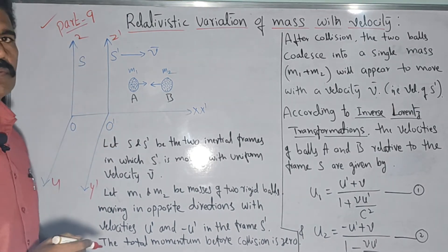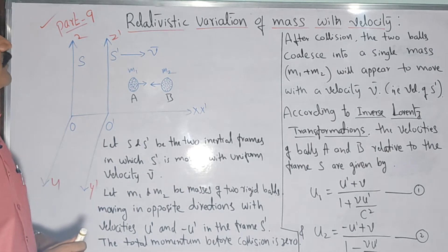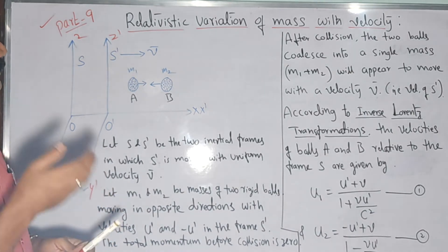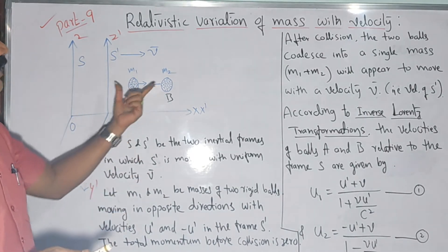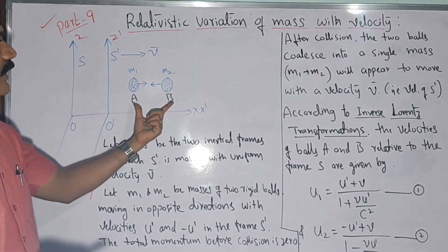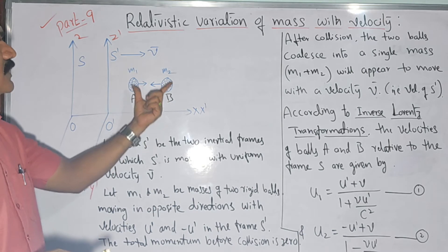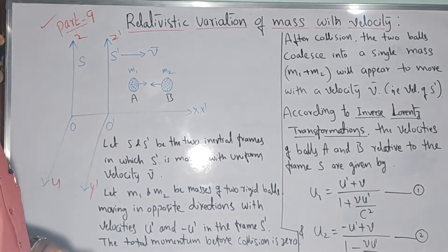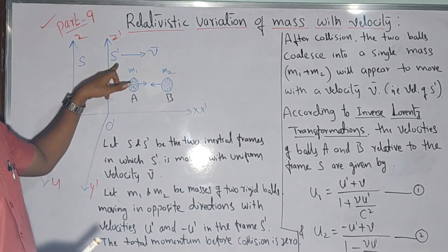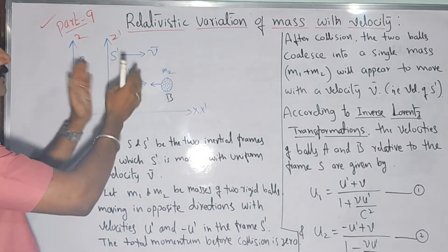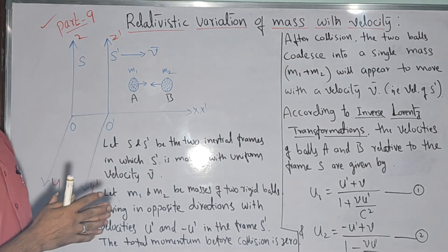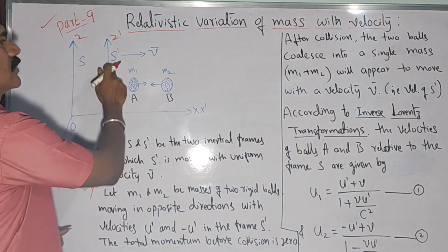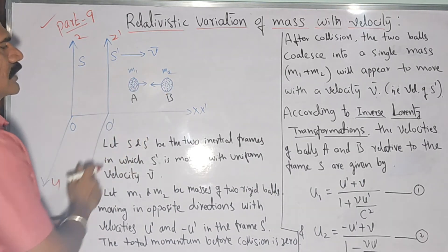In these two frames of reference, we have to prove that the mass of a body varies with respect to one of the observers. We consider two bodies A and B with corresponding masses M1 and M2 in the frame of reference S'. The masses are not considered constant here. The bodies are moving in opposite directions — body A moving left to right and body B moving right to left.